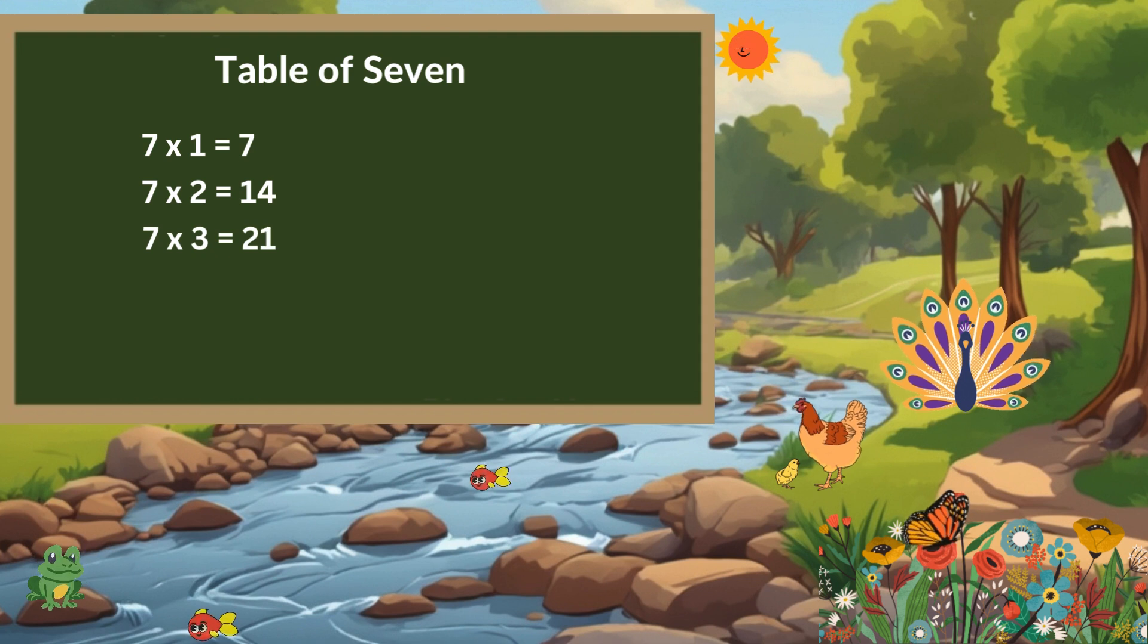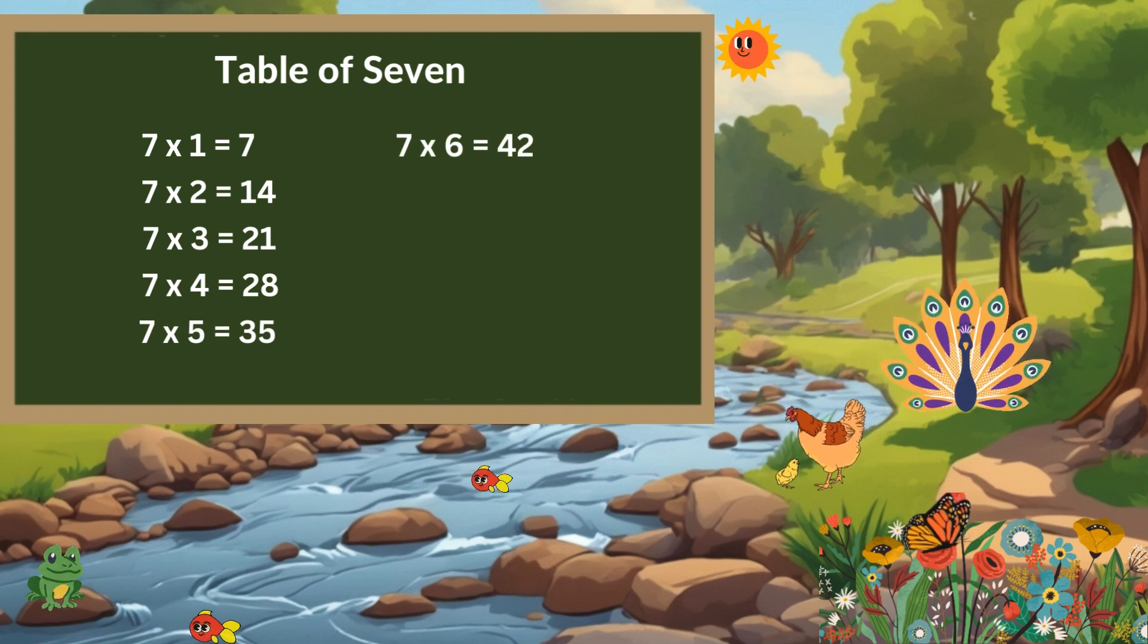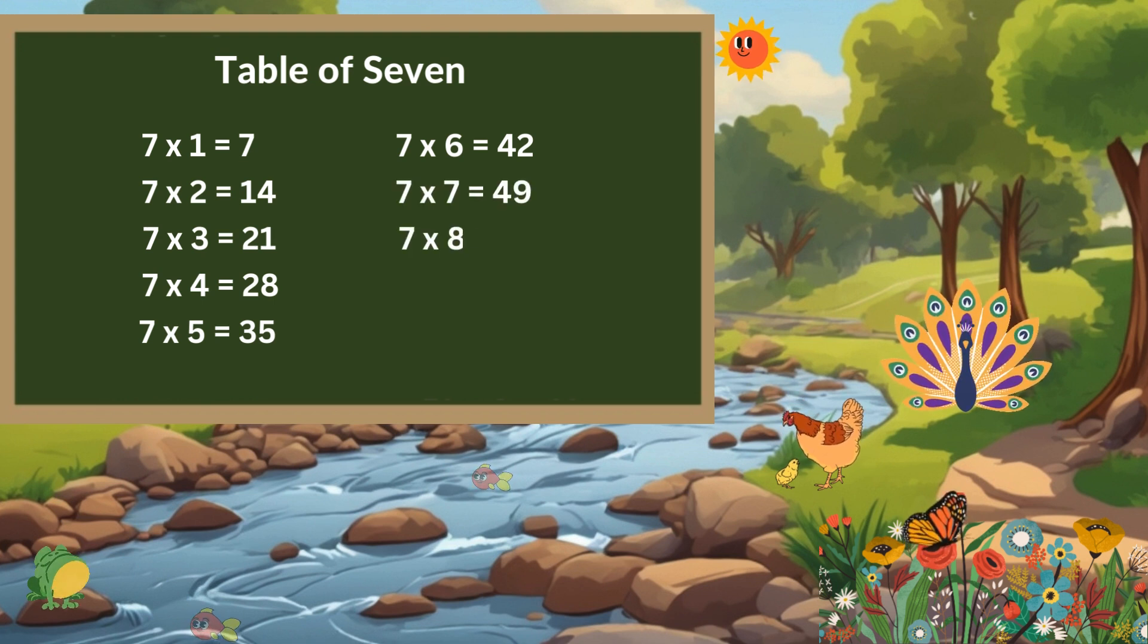7 times 3 is 21. 7 times 4 is 28. 7 times 5 is 35. 7 times 6 is 42. 7 times 7 is 49.